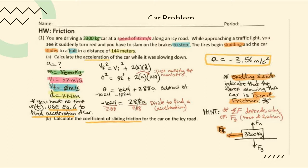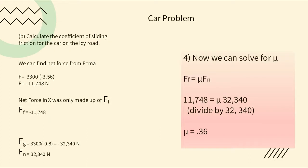Force of friction is the only horizontal force, so net force in x equals force of friction. This means once you find net force, you find force of friction. You don't need multiple forces in each direction — there can be just one. To calculate the coefficient of sliding friction, we'll find net force using F = ma.